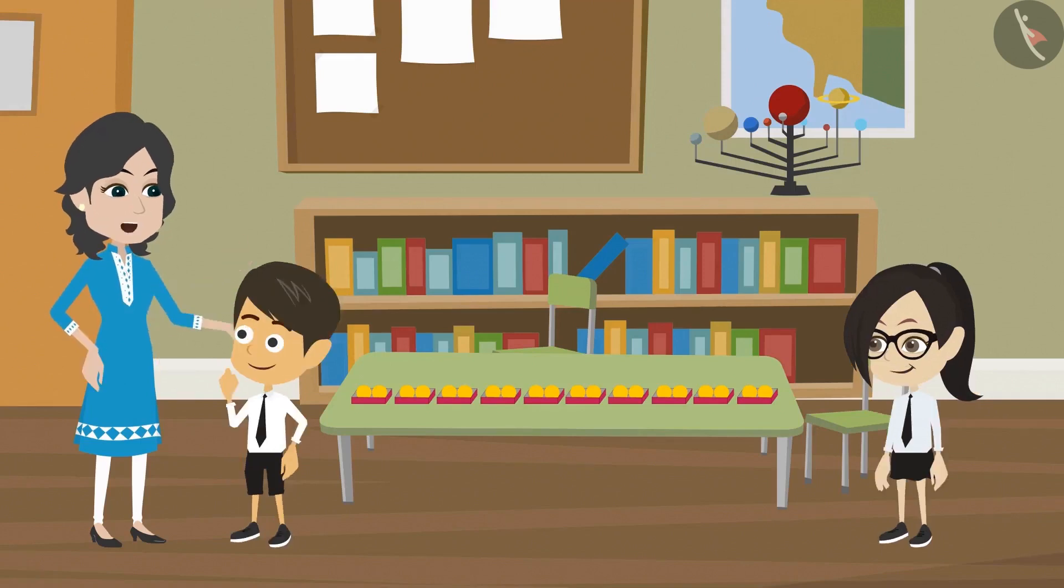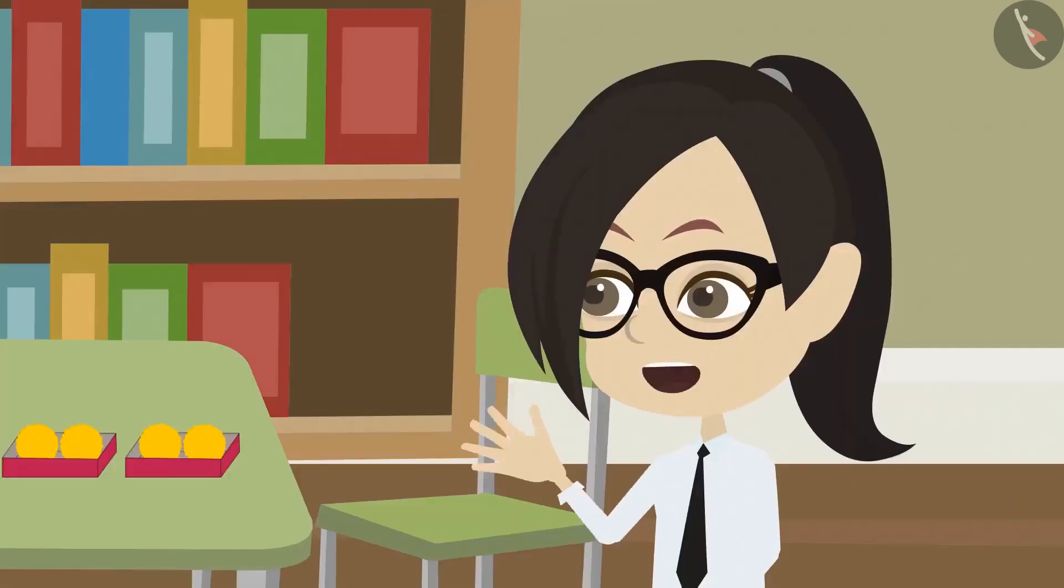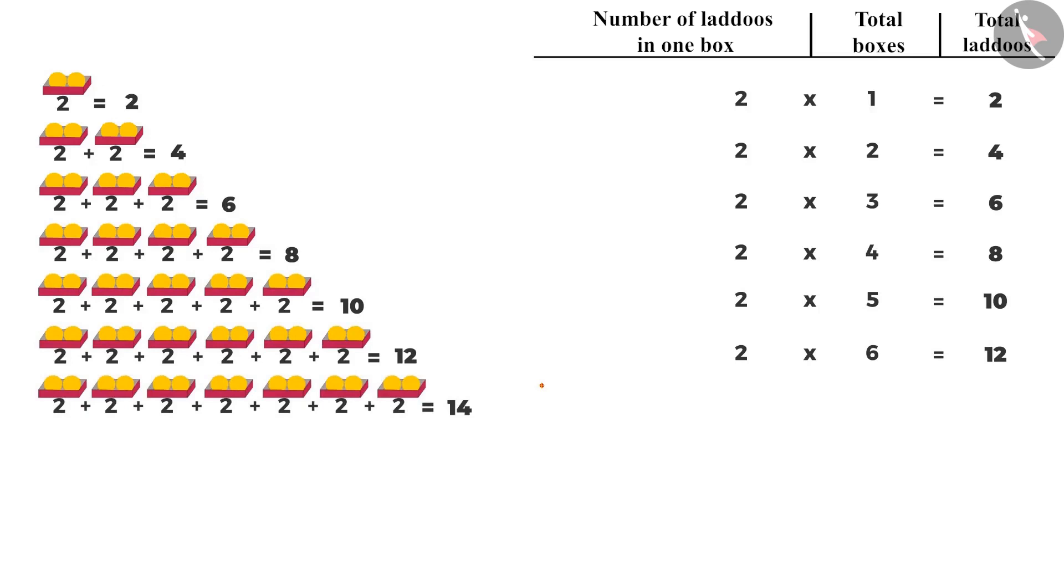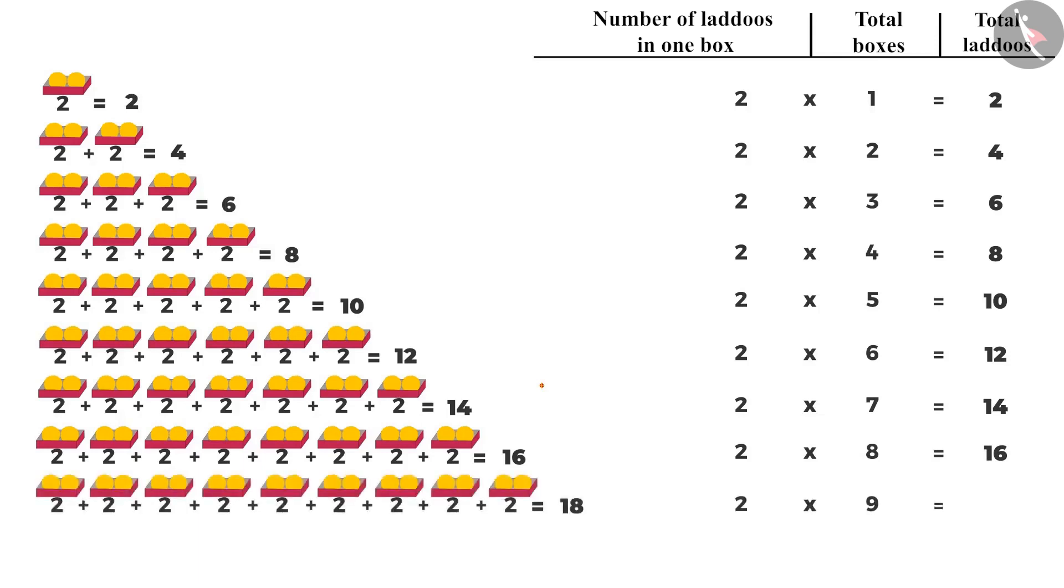No, for 5 to 10, you should try to find the result yourself and check. Then to find the ladoos in 5 boxes, here, number of ladoos is 2 and number of boxes is 5. Then we can find that there will be 10 ladoos in 5 boxes. Number of ladoos in 6 boxes will be 2 multiplied by 6, that is 12. Number of ladoos in 7 boxes will be 2 multiplied by 7, that is 14. Number of ladoos in 8 boxes will be 2 multiplied by 8, that is 16. In 9 boxes, it will be 2 multiplied by 9, that is 18. And the number of ladoos in 10 boxes will be 2 multiplied by 10, which comes to 20.